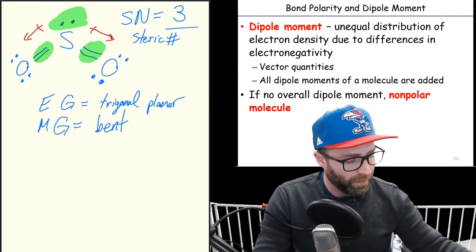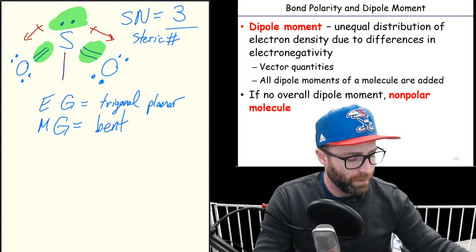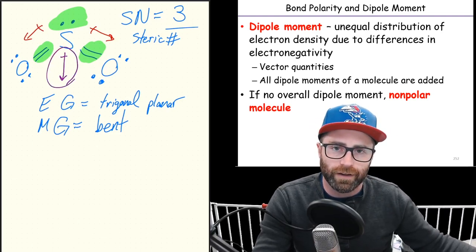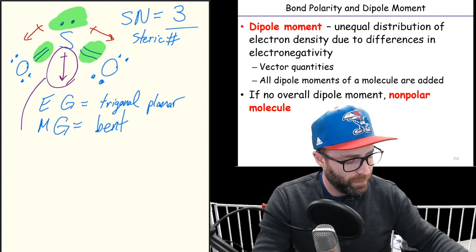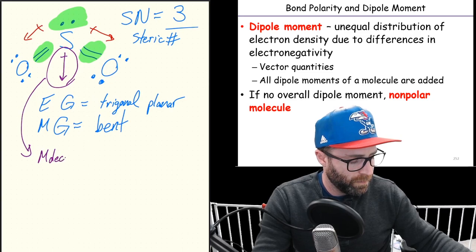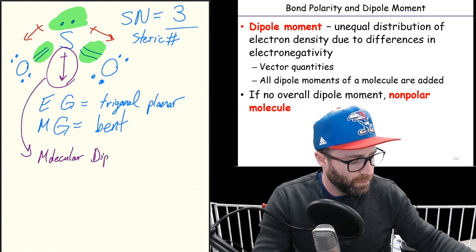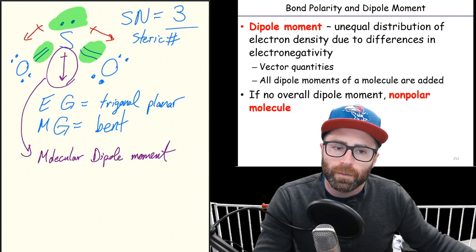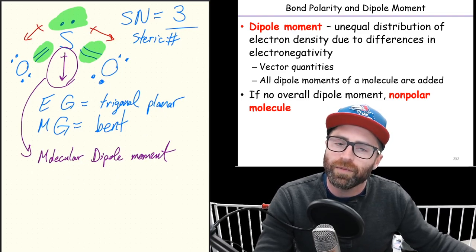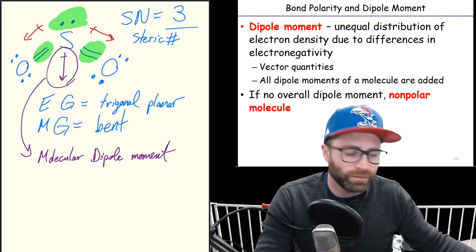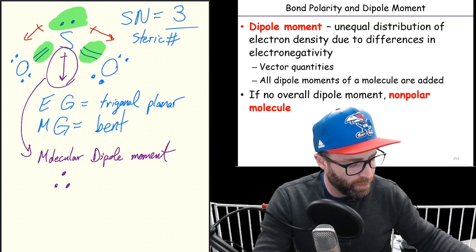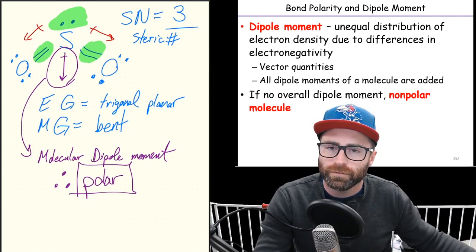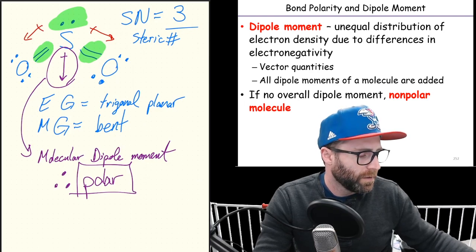So each one of these bonds has a bond dipole moment that is oriented in the direction that the red arrows are. When we add those arrows together using vector math, which I know is your favorite, we end up with the purple arrow, and the purple arrow is our overall molecular dipole moment. If you have a molecular dipole moment, are you a polar or non-polar molecule? Polar. Thus and therefore, polar. Does that make sense? Cool.